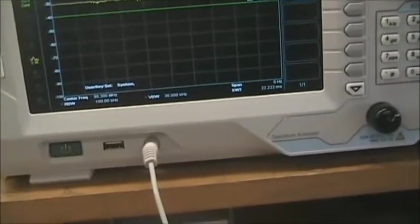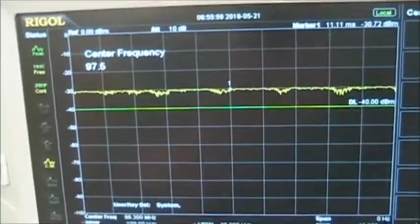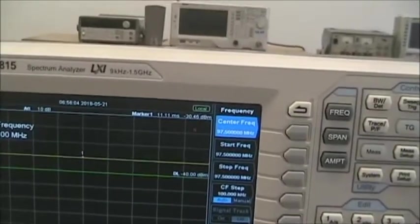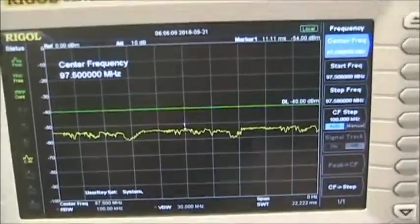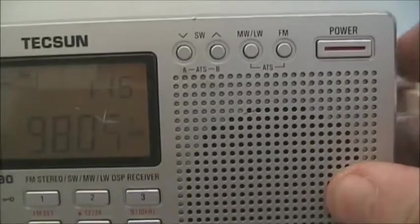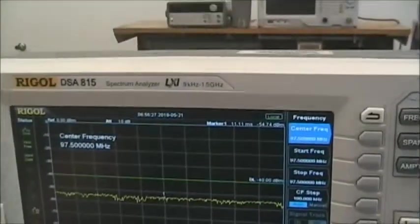So now we can check another channel. 97.5 was another frequency, so we'll type in 97.5 megahertz and see if we get a good download here. And we get that channel, so we'll change to 97.5, turn up the volume here. So, let me hear the music.